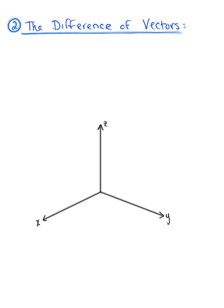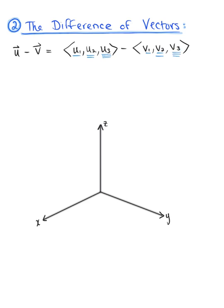Now let's consider the difference of two vectors using these same vectors u and v. We're thinking about what is vector u minus vector v. Vector u is defined by components u sub 1, u sub 2, u sub 3, and we're subtracting vector v with components v sub 1, v sub 2, v sub 3. Just like addition, we combine the like components — the x, y, and z components — being mindful of the negative sign. This gives us u sub 1 minus v sub 1, u sub 2 minus v sub 2, and u sub 3 minus v sub 3.